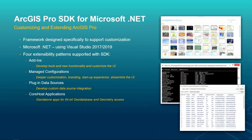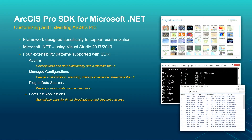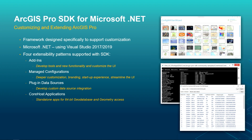The ArcGIS Pro SDK for Microsoft .NET has four patterns. The first is add-ins, which allows you to develop new tools and functionality that extends the user interface of ArcGIS Pro — the most common pattern in an enterprise. The next pattern is managed configurations, which provides all the capability of add-ins plus additional customization. That image showing tiled web maps is actually ArcGIS Pro — you can customize the Pro UI that much using managed configurations. Clicking any one of those web maps starts up ArcGIS Pro.